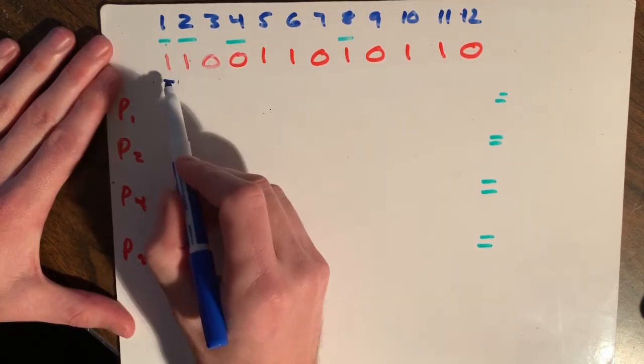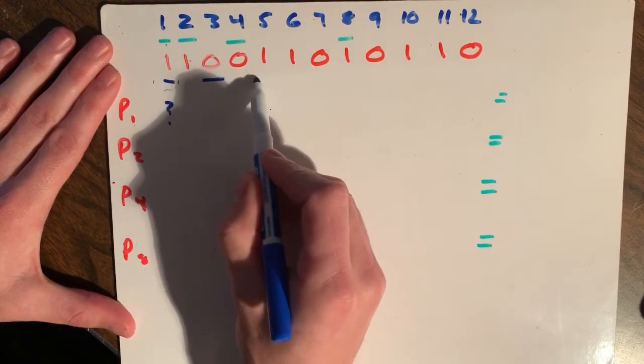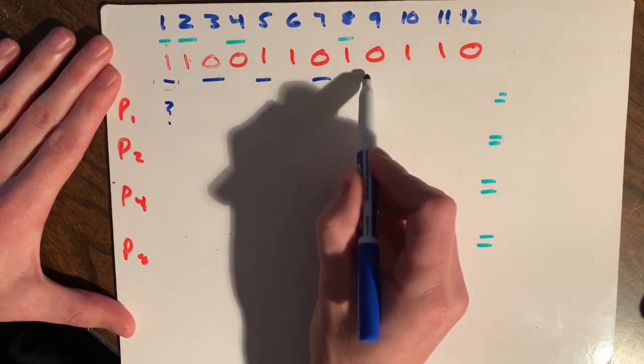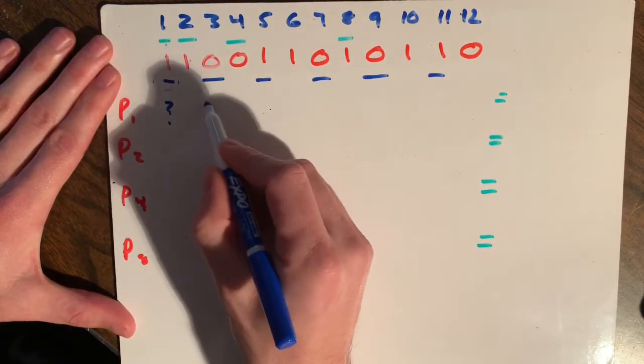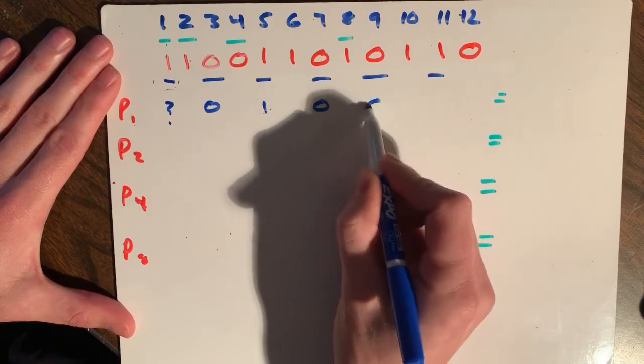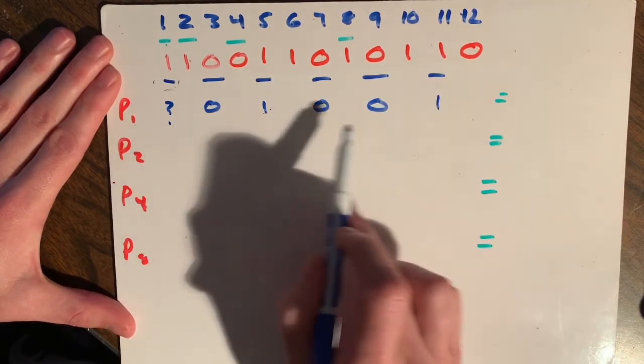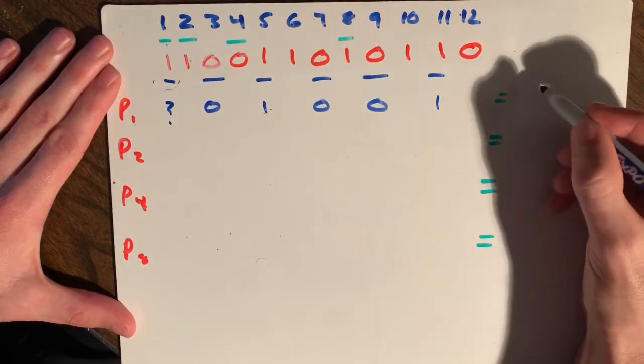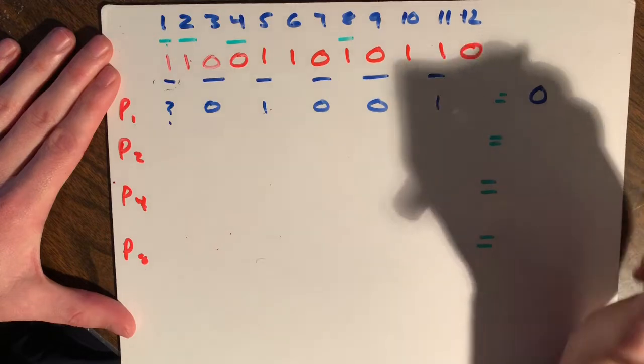...so we don't know what those are. So we're going to start at the one here, and that's going to be a question mark. And so we check one, skip one, check one, skip one, check one, skip one, and so forth. And then we fill in what we have. So we have a zero, a one, a zero, a zero, and a one. And you can see that we have two ones, so our first parity bit number here is going to be a zero.